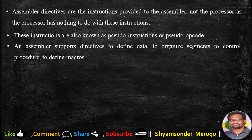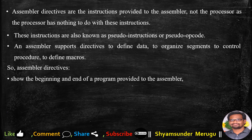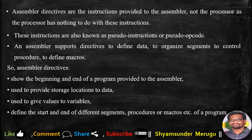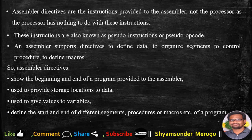An assembler supports directives to define data, to organize segments, to control procedures, and to define macros. Assembler directives show the beginning and end of a program, provide storage locations to data, give values to variables, and define the start and end of different segments, procedures, macros, etc.